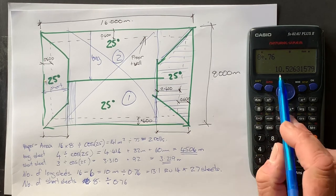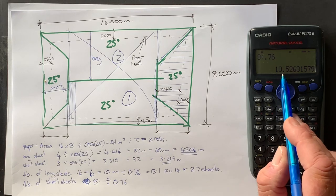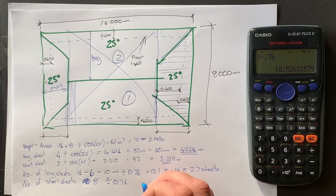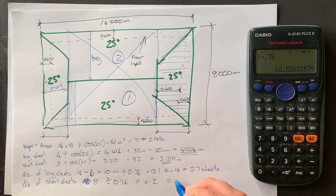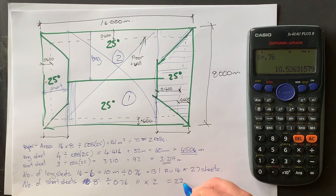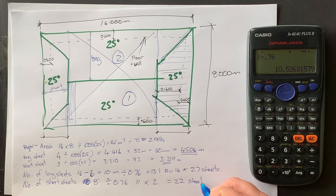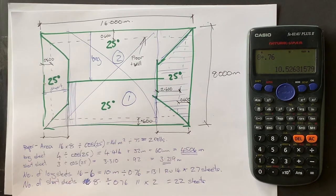Eight divided by 0.76. And then we've got 10.5 sheets. So it's more than the half. So we say we need 11 sheets, but then we need times two sides. That'll be 22 sheets. So 11 for this end, 11 for that end.